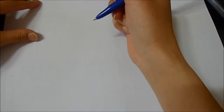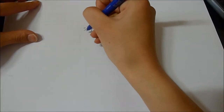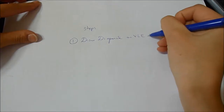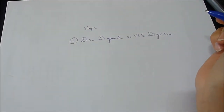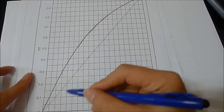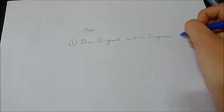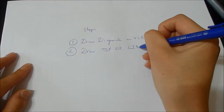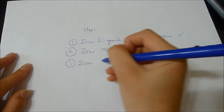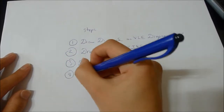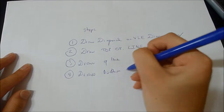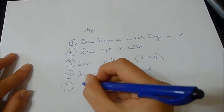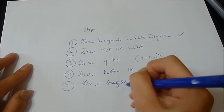In order to solve a distillation column problem, you need to follow these steps. First, draw the diagonal on the VLE diagram — the diagonal is basically this line here, already drawn. Second, draw the top operating line. Third, draw the Q-line. Fourth, draw the bottom operating line. We know Q equals 0.25. Fifth, draw the stages.